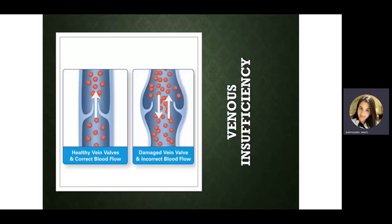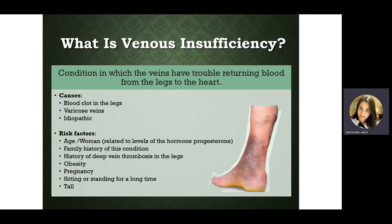Now let's move on to venous insufficiency — a disorder of the veins, not the arteries, peripherally. We also call it peripheral vascular disease or venous disease. In venous insufficiency, the veins are incompetent and not moving blood flow correctly.